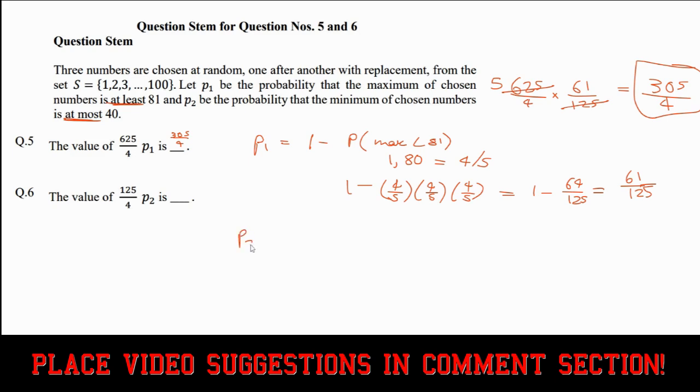Okay, and we're going to do it now. So P2 will be 1 minus the probability the minimum will be greater than 40, which means that every single number has to be greater than 40. So it'll be from 41 to 100, that's 60 numbers. So 60 out of 100, which is 3 fifths. So if it's 3 fifths, same process again. I'll do it all the way on the left here now. So P2 is equal to 1 minus 3 fifths cubed, since each of the three numbers has to be in that range. This becomes 1 minus 27 over 125, which is 98 over 125.